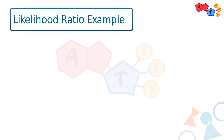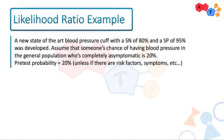A new state-of-the-art blood pressure cuff with a sensitivity of 80% and a specificity of 95% was developed. Assume someone's chance of having high blood pressure in the general population who's completely asymptomatic is 20% — this is our prevalence, and our pretest probability equals prevalence here since there are no risk factors or symptoms. Our positive likelihood ratio is sensitivity over one minus specificity: 0.8 over 0.05, yielding a positive likelihood ratio of 16.